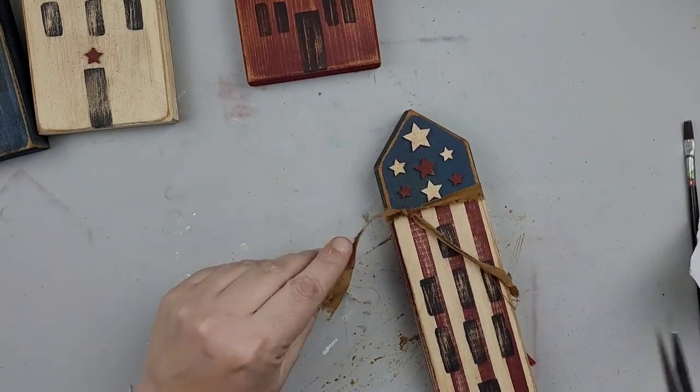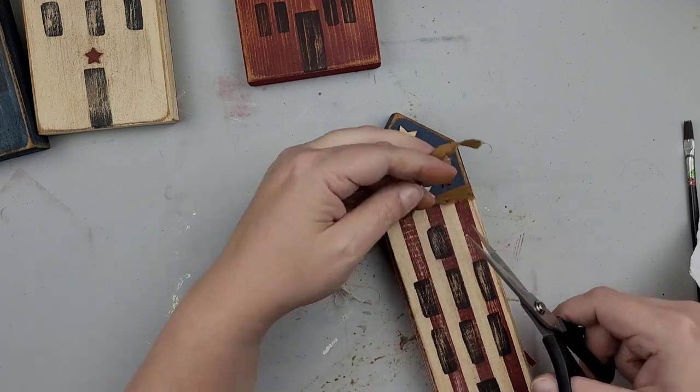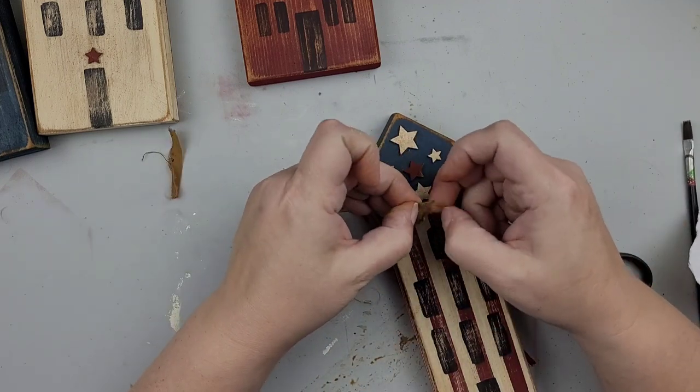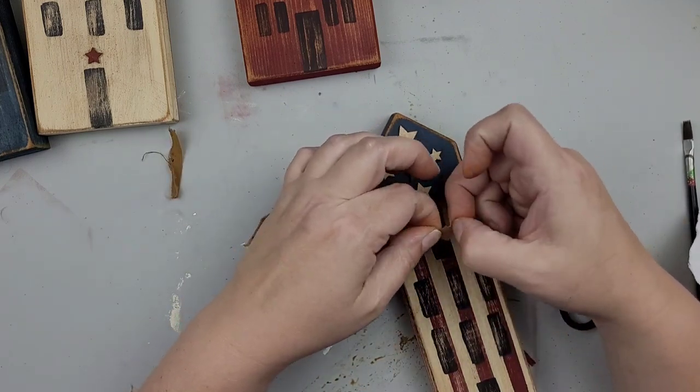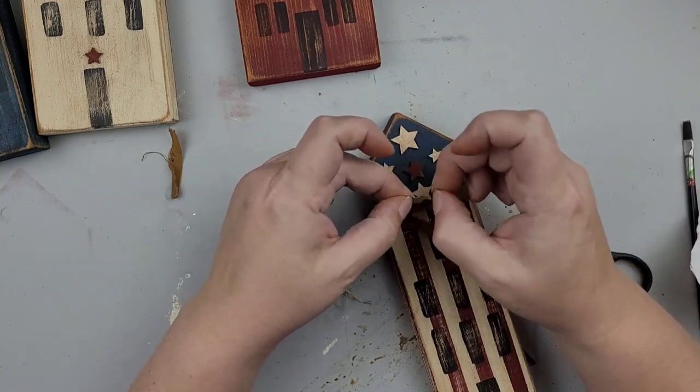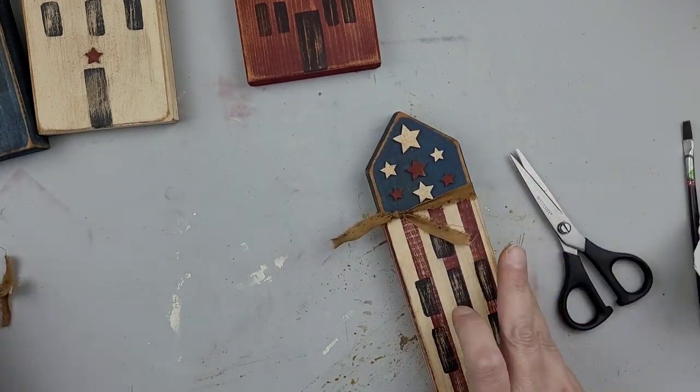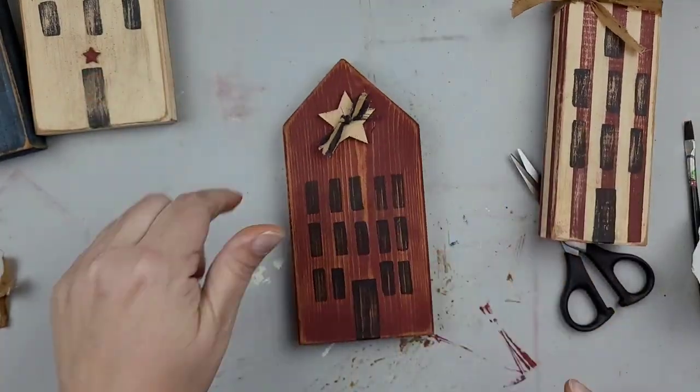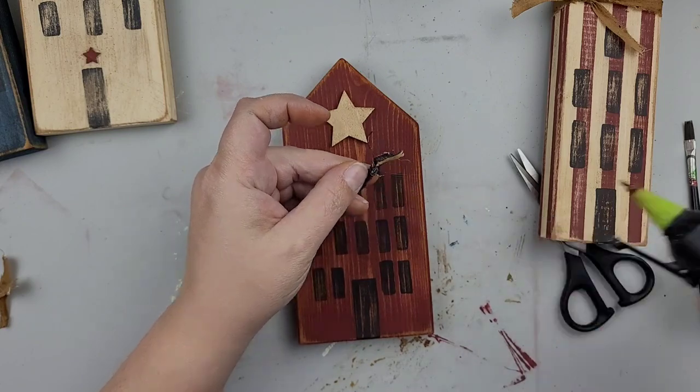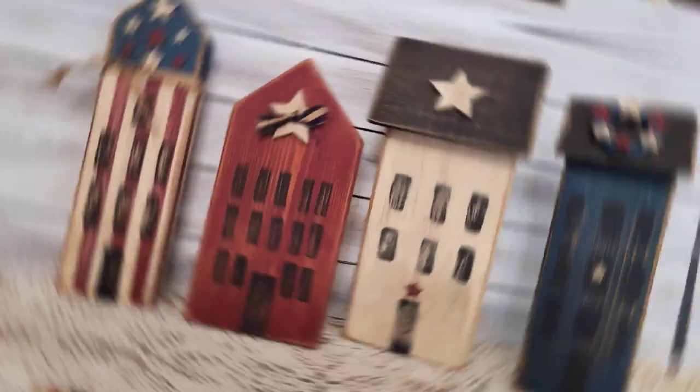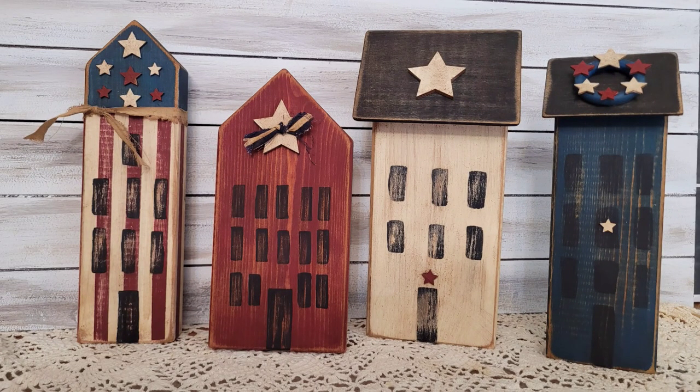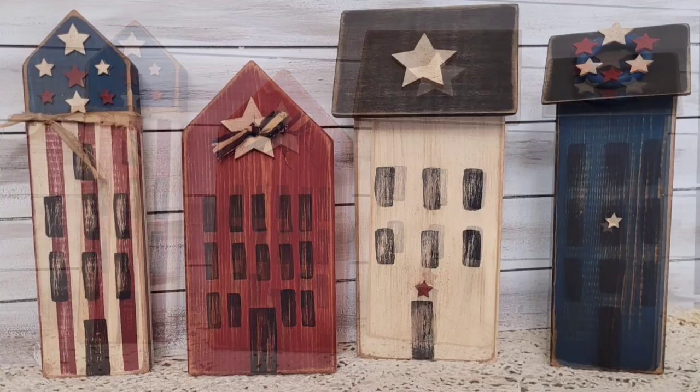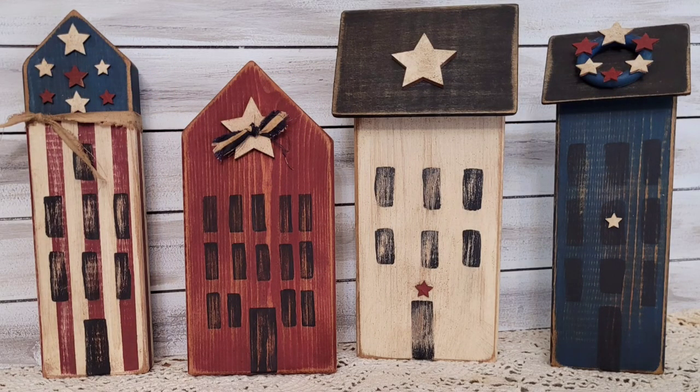Next, I'm going to add some coffee dyed fabric. And this is just a little piece that I had. I tied it around this house. And then I had another piece that I tied into a little knot. And I'm going to add it to the star in the middle of the red house. And that's really all there is to this project. These turned out so cute. And I am so excited to have these in my kitchen decor.